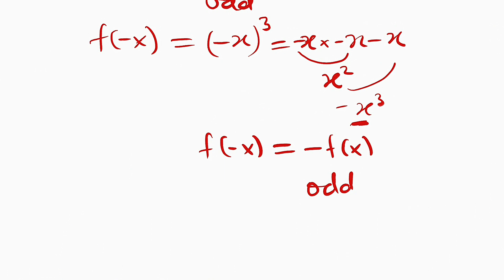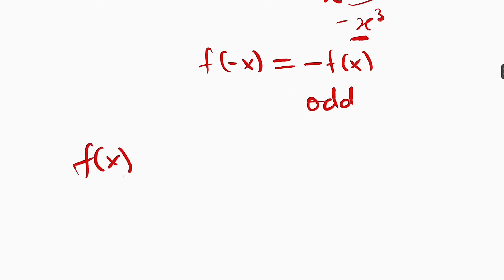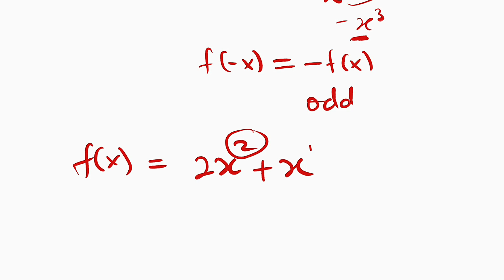Sometimes you may have a function which is neither an odd function nor an even function. That is when you have a combination of even powers and odd powers. For example, if you have a function like 2x squared plus x, you can see x has a power of 1 which is odd, and also a power of 2 which is even. A combination of the two will result in neither even nor odd.